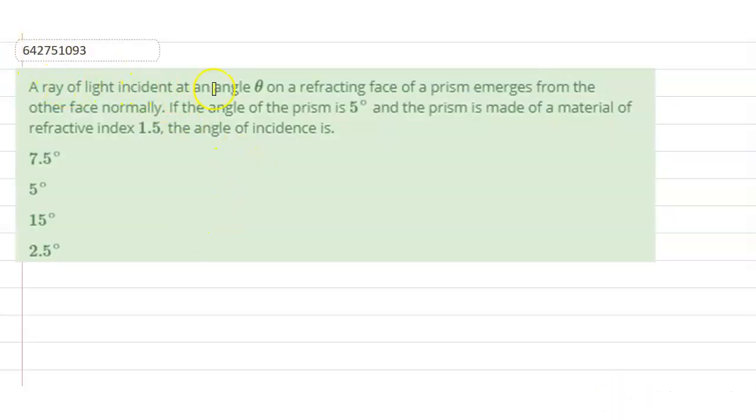A ray of light incident at an angle theta on refracting face of a prism emerges from the other face normally. If the angle of the prism is 5 degrees and the prism is made out of material of